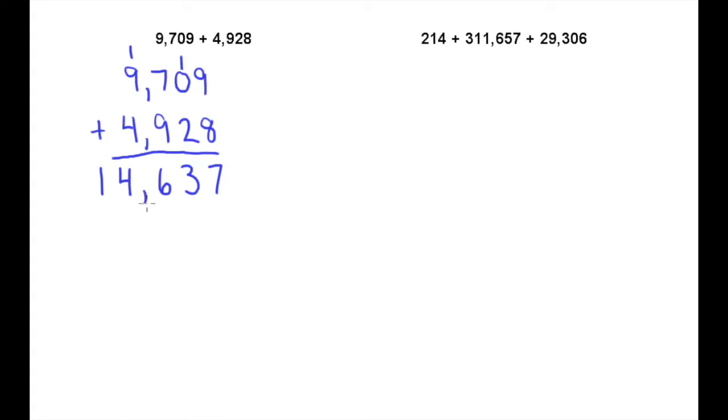Now let's take a look at this example. We're adding up more than two numbers, so we're just going to set things up in the same way, but we're going to have three numbers lined up vertically. As I mentioned before, we like to have the number with the most digits on top. That just tends to make it easiest, at least for me. So I'm going to take that middle number, 311,657, and that one's going to be my top number.